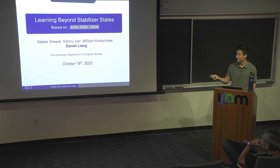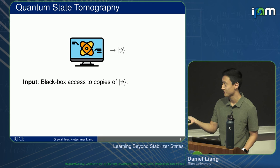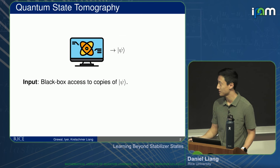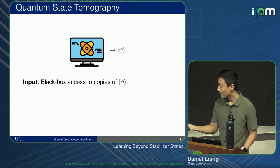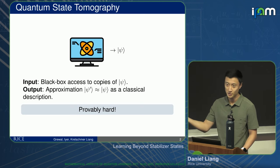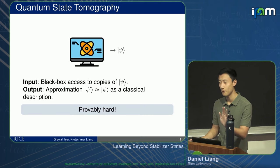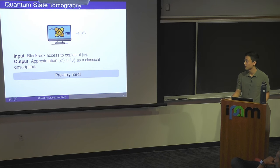I assume most of you went to Srinivasan's talk, so I don't actually have to tell you what tomography is. But if you weren't there: you have black-box access to copies of some state — I'll assume a pure state — and the goal is to approximate it with a classical description. It's hard in general; it's an exponentially long vector you can't even write down in polynomial time. I'm mostly going to focus on time complexity, while Srinivasan mostly talked about sample complexity.